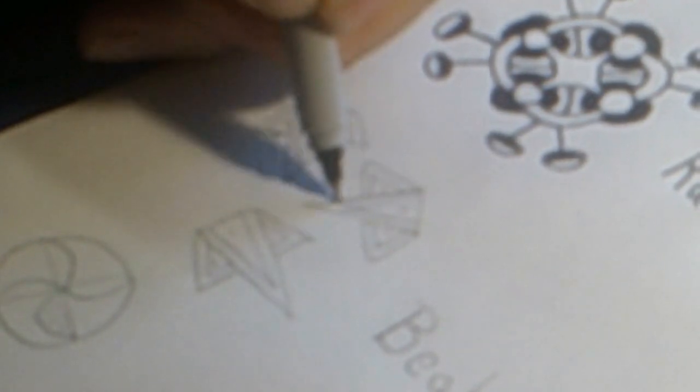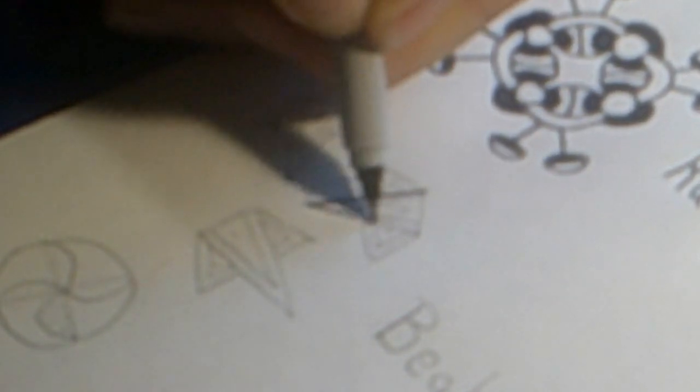We're going to start off by drawing a V-shape and then let's close that off at the top.